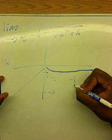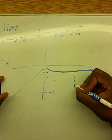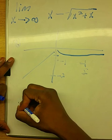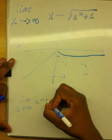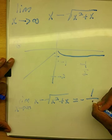So we're going to say that just based on the graph alone, that this limit, the limit as x approaches infinity of x minus the square root of x squared plus x equals negative 1 half.